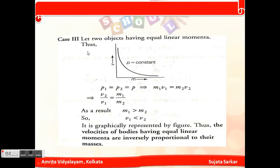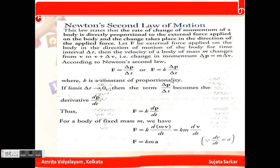Now, this is a very important part — Newton's Second Law of Motion. It states that the rate of change of momentum of a body is directly proportional to the external force applied on the body, and the change takes place in the direction of the applied force. If F is the external force applied in the direction of motion for time interval delta t, then F is proportional to delta p by delta t.